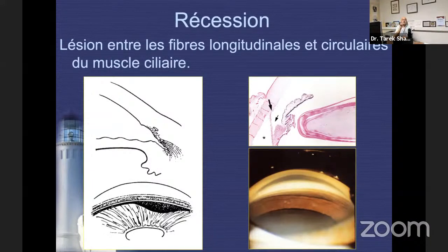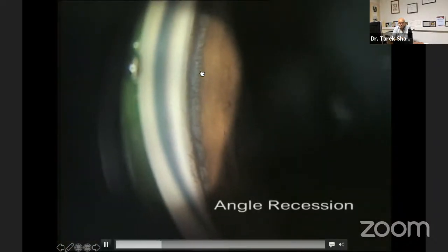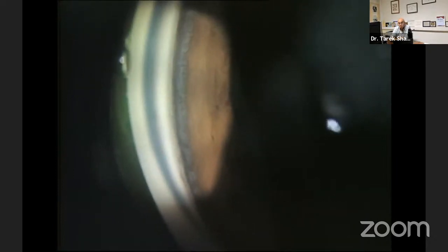Remember that anyone with recession and no elevated IOP at this point may develop elevated IOP years later. The longest case I have seen was a man hit in the eye at age four who developed unilateral recession glaucoma 63 years later at age 67. This video shows a massive recession taking about 90 degrees of the angle.